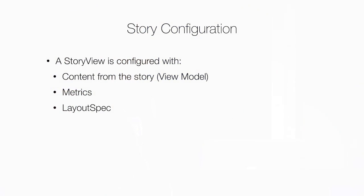So instead of having a hierarchy of objects, we actually just configure a story view with these objects instead. A story view is defined by its contents, which is a view model; metrics, which is a structure describing its appearance; and a layout spec, which I'll go into in a moment.